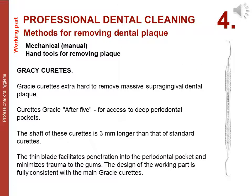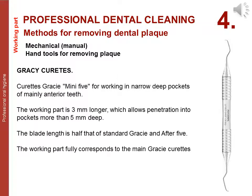Gracey curets 'extra rigid' are used to remove massive supra-gingival dental plaque. Gracey curets 'after 5' allow access to deep periodontal pockets — their shaft is 3 mm longer than standard curets; the thin blade facilitates penetration into the pocket and minimizes gum trauma. Gracey curets 'mini 5' are for working in narrow, deep pockets of mainly anterior teeth; the working part is 3 mm longer, allowing penetration into pockets more than 5 mm deep, with blade length half that of standard Gracey after-5.